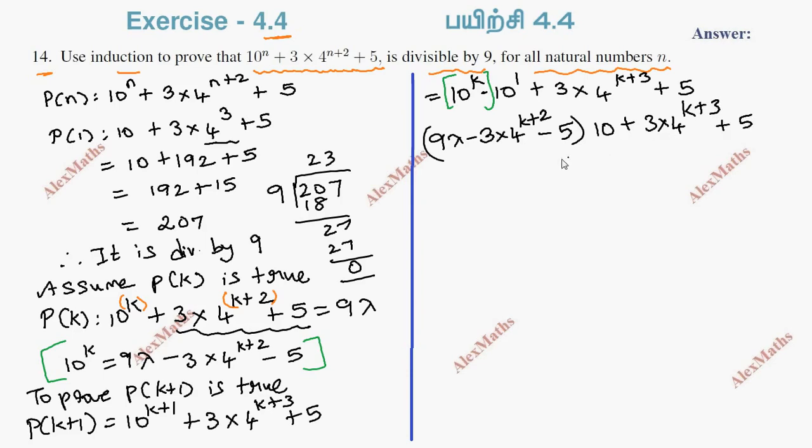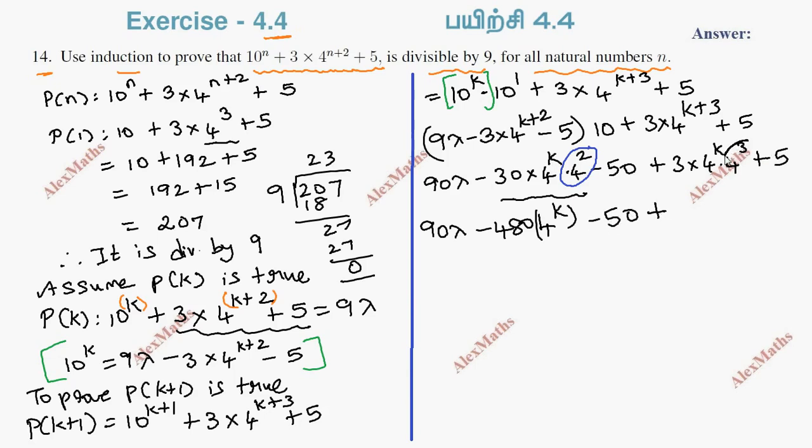Plus 5. Multiplying by 10: 90λ minus 30 × 4^(k+2). Now 4^(k+2) = 16 × 4^k, so first term is 90λ minus 480 × 4^k minus 50. Plus 3 × 4^(k+3), which is 64 into 3, equals 192 × 4^k. Last term is plus 5. Now combining terms: 480 minus 192.